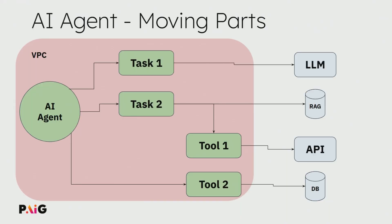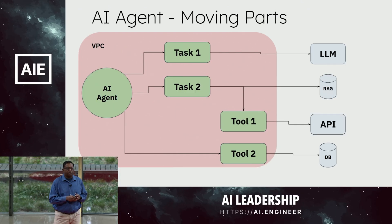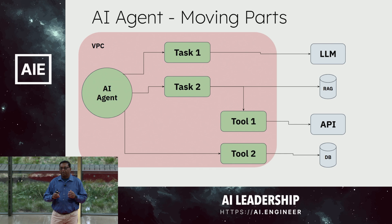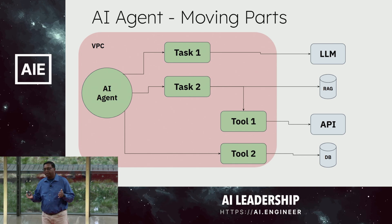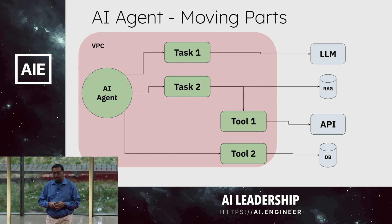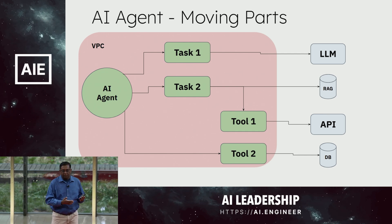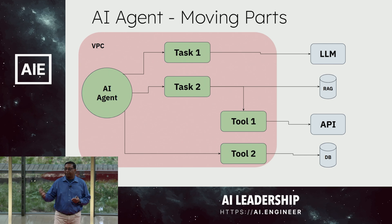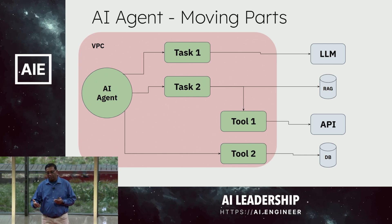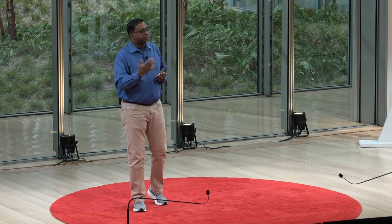To give a visual representation, there could be multiple agents, and an agent may have access to multiple tasks, and there could be multiple tools, and these tools can talk with APIs and DBs. One thing to note is that most agent frameworks today are run as a single process — meaning the agent, the task, and the tools are all in the same process. That means if a tool needs access to a database, it needs to have the credentials, and if they want to make API calls, it needs shared tokens.